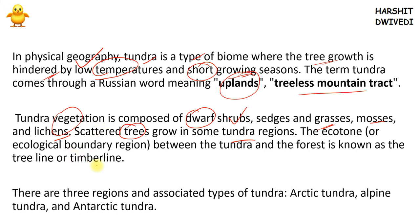There is one important concept here you need to understand: the timberline or treeline — the ecotone. I have already explored what an ecotone is in my previous environment video, so I won't detail it here. It is the combination or boundary of two different biomes or ecosystems. When there is an ecological boundary between a forest ecosystem and a tundra ecosystem, that is where the treeline or timberline is found.